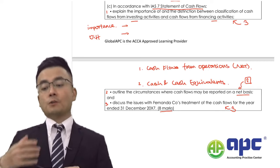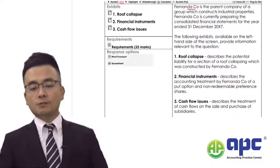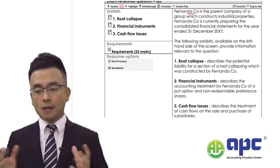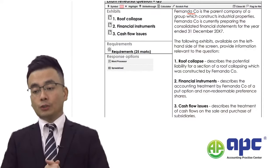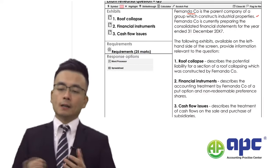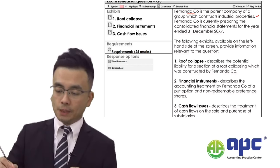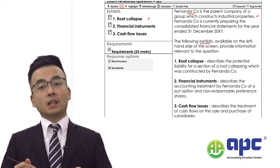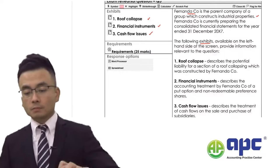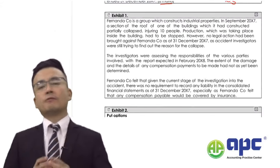Now let's read through the background of the case. Fnada Company is the parent company of a group which constructs industrial properties. Fnada Company is currently preparing the consolidated financial statements covering: exhibit one — the roof collapse; exhibit two — the financial instrument; and exhibit three — the cash flow issues. Let's read through exhibit number one to deal with part A.